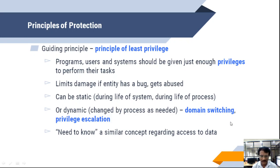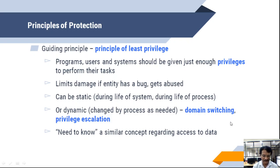This limits the damage if an entity has a bug and gets abused. If something went wrong, the damage should be minimized. Whatever the problems may be — static during the lifetime of the system or the process, or dynamic which may change as needed — domain switching and privilege escalation can all be done to protect the system.